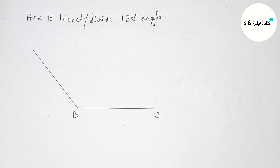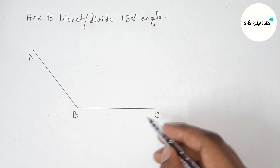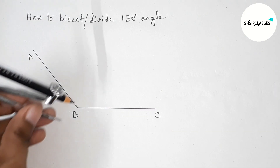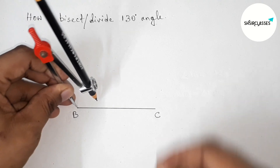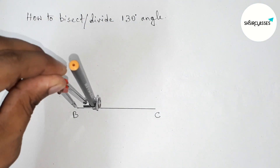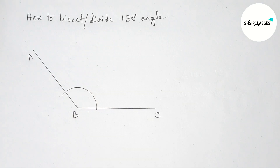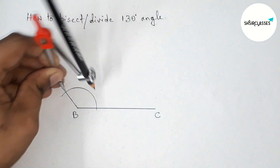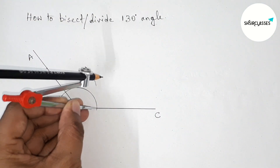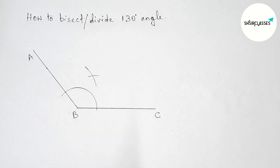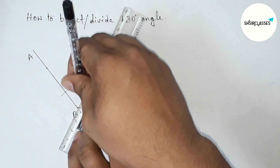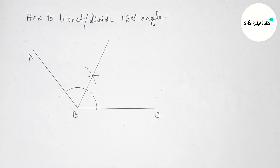Now taking point A here — this is the 130 degree angle. Next, bisecting this angle by putting the compass on point B and taking any length, drawing an arc. Then putting the compass on the arc intersection point, taking greater than half of this, drawing an arc here, and with the same length cutting here to get the bisector line.